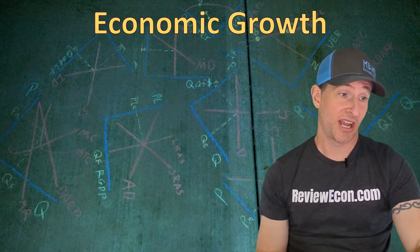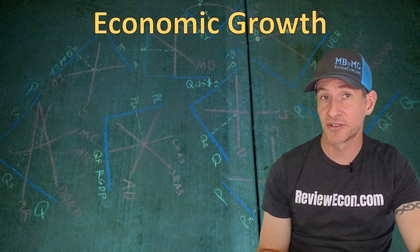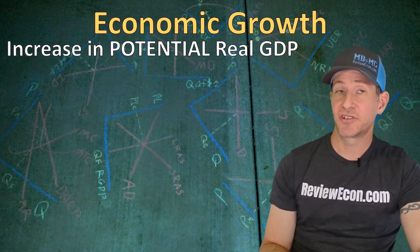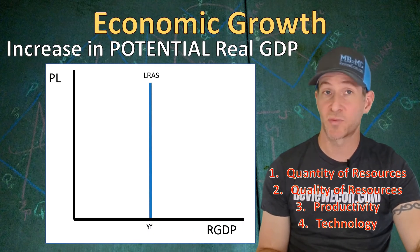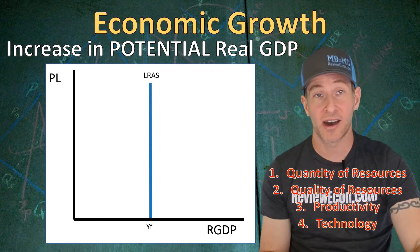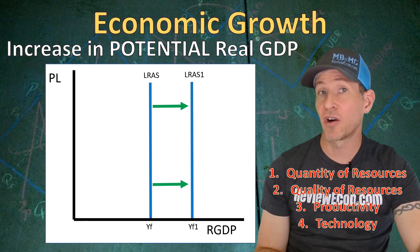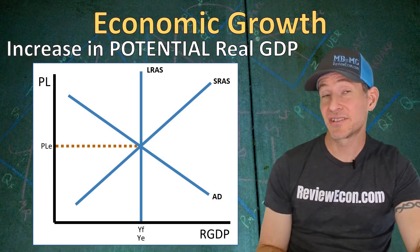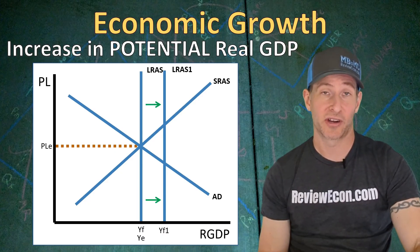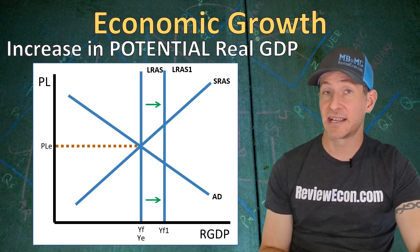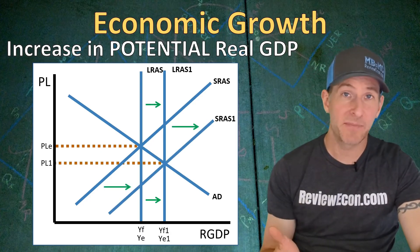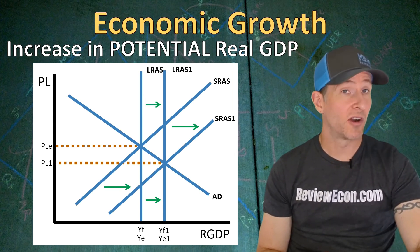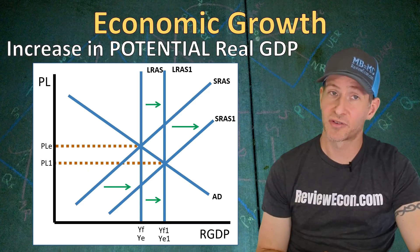Finally, we're going to talk about how economic growth changes in the long run. Economic growth is not an increase in real GDP — economic growth is an increase in potential real GDP. Increases in the quantity or quality of workers, as well as productivity increases or technology increases, will all cause economic growth. We see that as a rightward shift of the long-run aggregate supply curve. When we bring the short-run aggregate supply curve and the aggregate demand curve together on this graph, we can see economic growth as a rightward shift of the LRAS curve. When the long-run aggregate supply curve shifts to the right, the short-run aggregate supply curve will eventually also shift to the right. On the AP macroeconomics exam, economic growth is usually only talked about in regards to the long-run aggregate supply curve shifter.